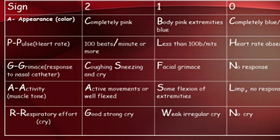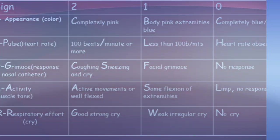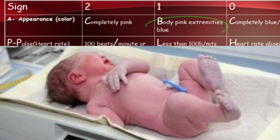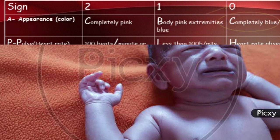Looking at the scoring chart, the first parameter is Appearance — the color of the baby. If the body color is completely pink, the score is 2. If the body is pink but the extremities are blue, the score is 1. If the baby is completely blue or pale in color, the score is 0.